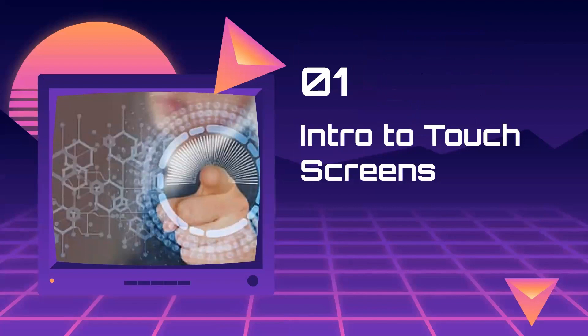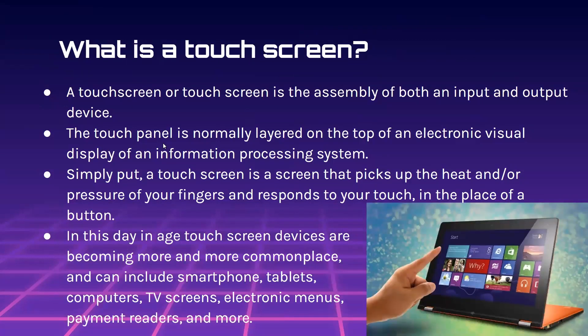Let's begin with the intro to touchscreens. What is a touchscreen? A touchscreen, or touch screen typed as two separate words, is the assembly of both an input and output device. The touch panel is normally layered on top of an electronic visual display of an information processing system. Simply put, a touchscreen is a screen that picks up the heat and/or pressure of your fingers and responds to your touch in the place of a button.